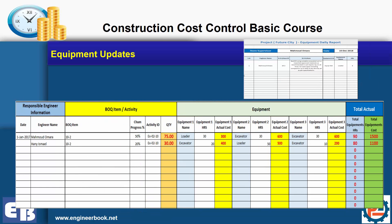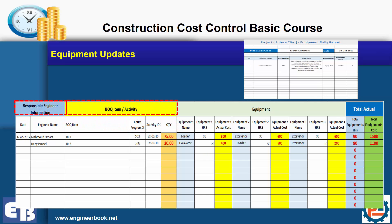We also have the equipment updates. From the equipment daily report, we can create updates just as we did for labor and materials. We have the engineer, the BOQ item, and the equipment used in this item. And of course we are going to calculate the actuals.